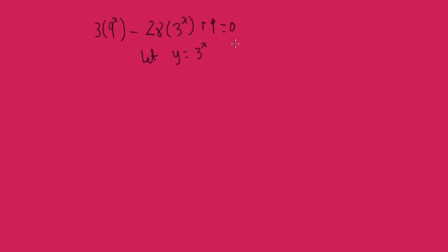Now, here, therefore, 9 to the power of x is the same as 3 to the power of x squared. So we've got, we're going to have 3y squared, because 3 to the power of x squared is going to be 9 to the power of x, minus 28y plus 9 equals 0.